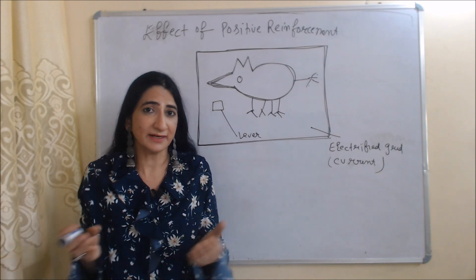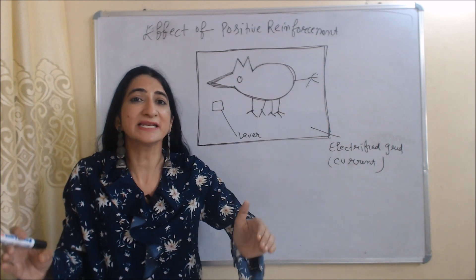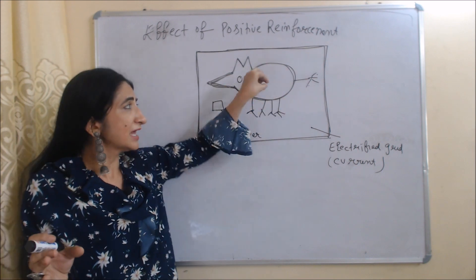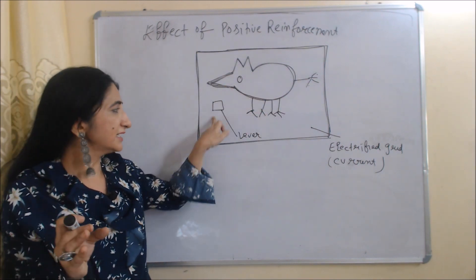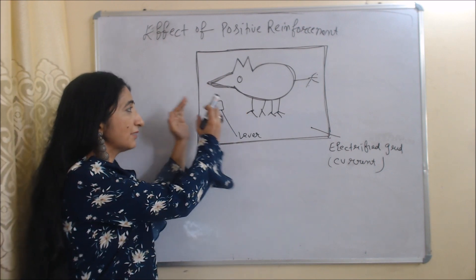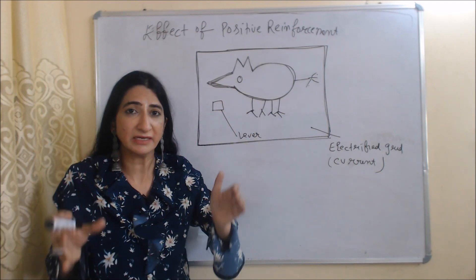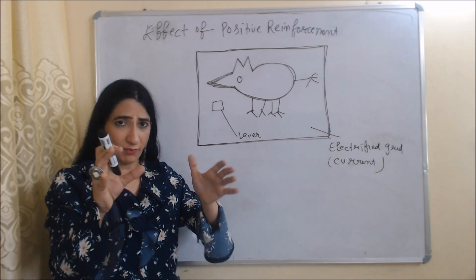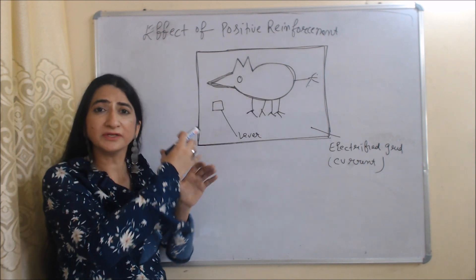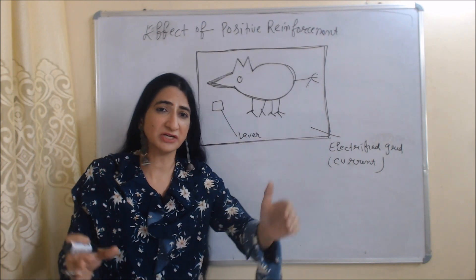Skinner did one experiment on a rat, and with the help of this experiment he explained this theory. In this experiment there is one box, and within the box there is one rat. There is a lever — when the rat presses this lever, food comes inside the box. Initially, when the rat was very hungry, he was moving inside the box and accidentally pressed the lever, and food came.